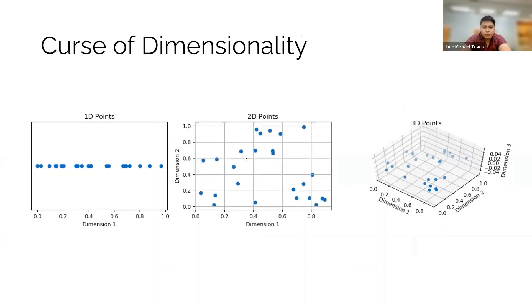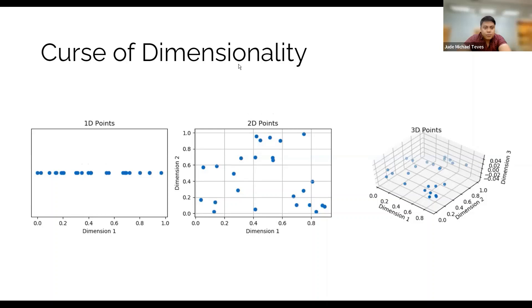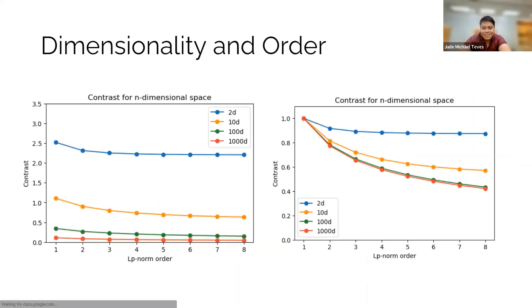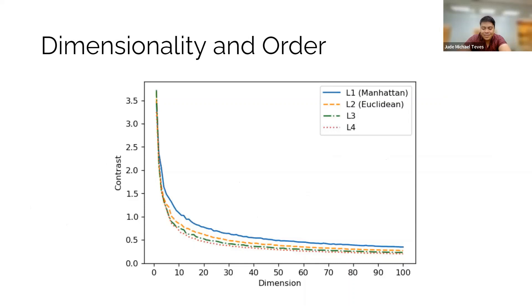That's the bottom line. You're going to become more similar. So it's hard if you have so many dimensions and the distance metric that you're using has a very high order. Yeah, that's really it. That's the purpose of that slide. I just did a breakdown of the earlier slide.